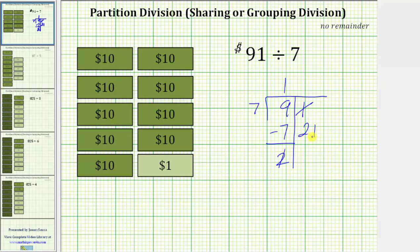We now share the 21 $1 bills equally among the seven friends. And because seven times three equals 21, we now know each of the seven friends can receive three $1 bills.